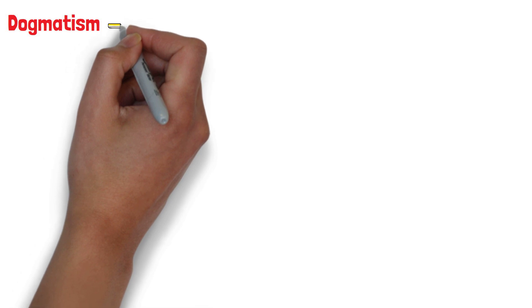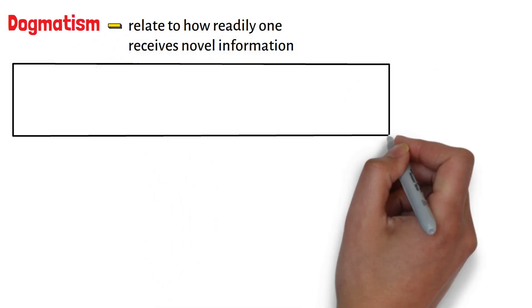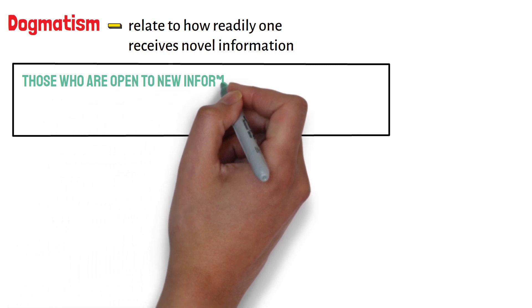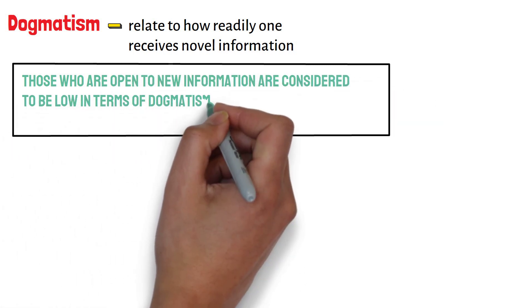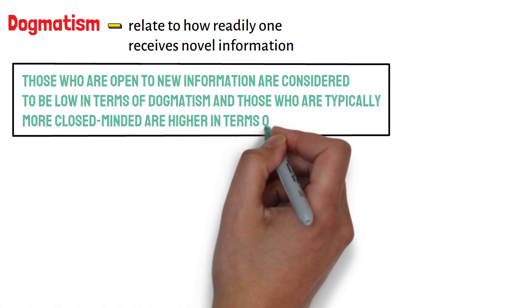Dogmatism can also relate to how readily one receives novel information. Those who are open to new information are considered to be low in terms of dogmatism, and those who are typically more closed-minded are higher in terms of dogmatism.